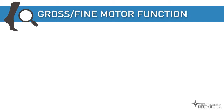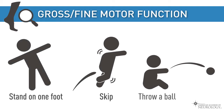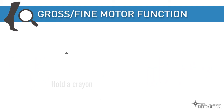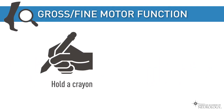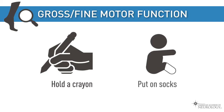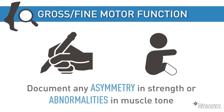In addition to the traditional neurological examination, assess gross motor and fine motor functions specifically. Can the child stand on one foot, skip, or throw a ball? Can they hold a crayon with a mature grasp? Are they able to put their socks on by themselves or tie their shoes? Document any asymmetry in strength or abnormalities in muscle tone.